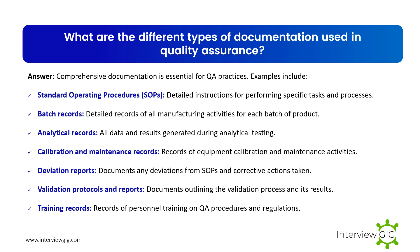What are the different types of documentation used in quality assurance? Comprehensive documentation is essential for QA practices. Examples include: standard operating procedures (SOPs), which are detailed instructions for performing specific tasks and processes; batch records, which are detailed records of all manufacturing activities for each batch of product; analytical records containing all data and results generated during analytical testing; calibration and maintenance records for equipment; deviation reports documenting any deviations from SOPs and corrective actions taken; and validation protocols and reports outlining the validation process and its results. Training records document personnel training on QA procedures and regulations.